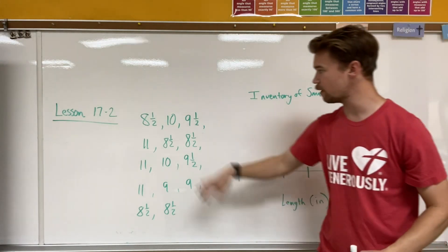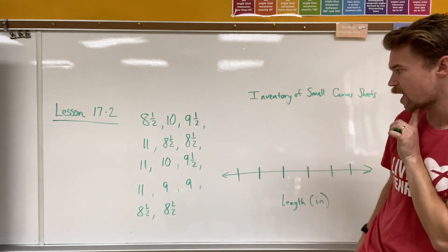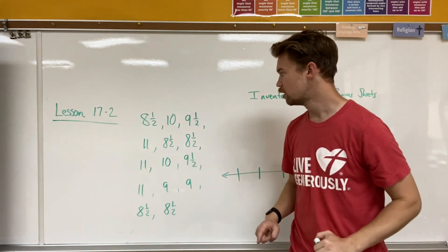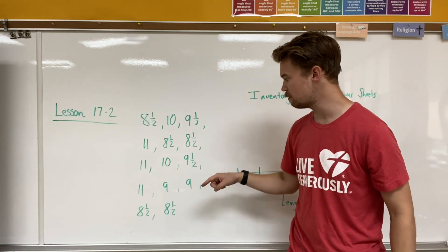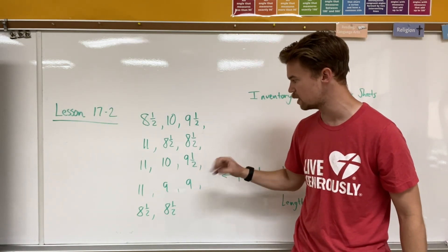Now, I have a whole bunch of data right here. I have eight and a half. I'm trying to find my smallest one, which looks like it's eight and a half. And what's my biggest one? 11. So if I go eight and a half, I have some nines, I have some tens, I have some nine and a half. So I have some tens and 11s.